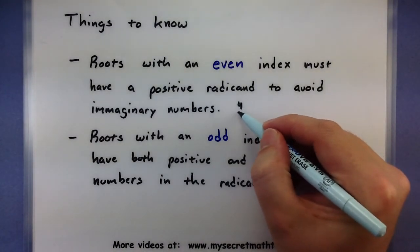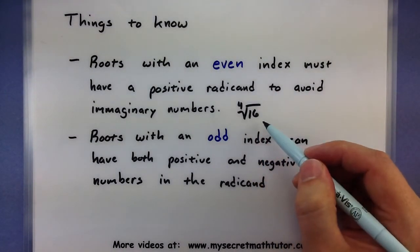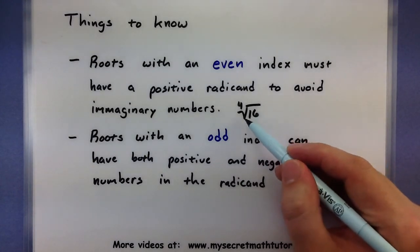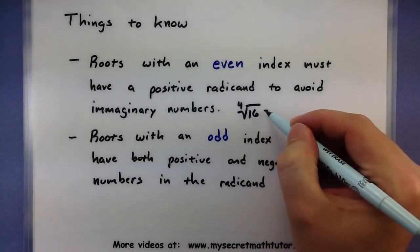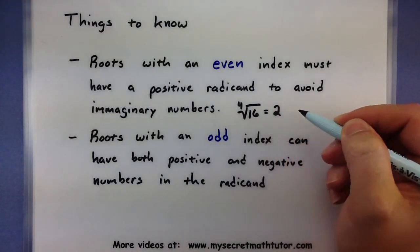So suppose I'm looking at the 4th root of 16. The numbers in the radicand, these guys right underneath it, we hope that they're either 0 or some sort of positive number. That way I can actually talk about what their result is.